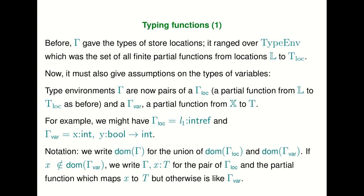We've seen the runtime behavior of functions and the different design choices available. Now we can move from the dynamic semantics of functions to their static semantics — their typing. Before, we had a typing relation: E has type T under assumptions gamma. Gamma gave only the types of store locations, as a partial function from locations to types. Now we're going to extend it so that we give assumptions on the types of variables as well.